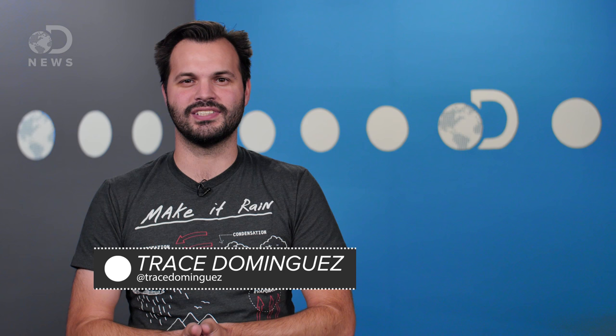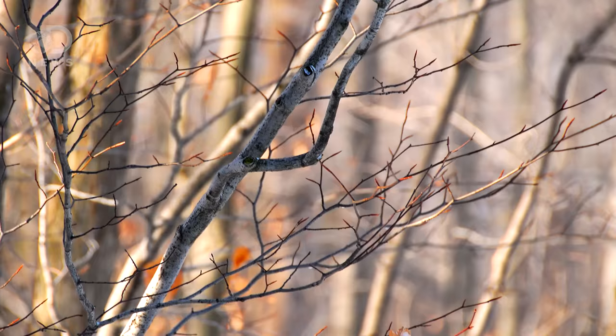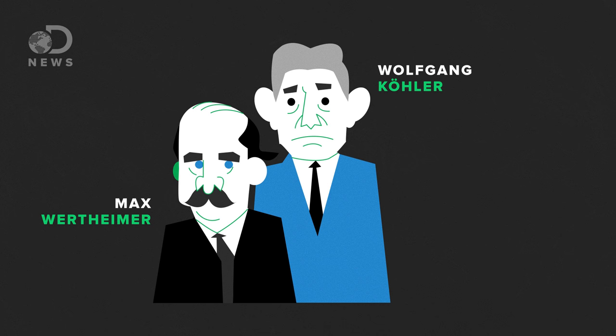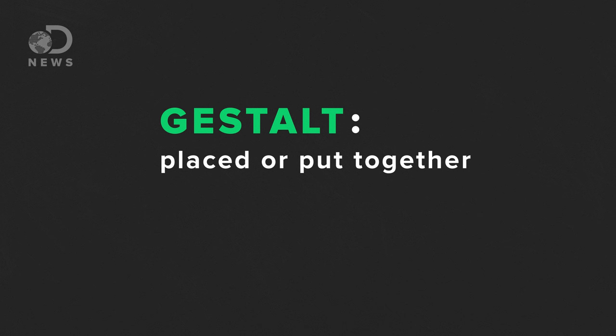Your brain evolved to look at the natural world, and you might think, what a mess — there's dirt and leaves and plants and stuff scattered everywhere, but that's not really true. When you look at a tree, you don't see a branch and a leaf and a trunk, you see a tree. But why? In 1912 in Germany, three psychologists named Max Wertheimer, Wolfgang Köhler, and Kurt Koffka started the Gestalt psychology movement. Gestalt means placed, or put together, with the base idea being the whole of anything is greater than its parts.